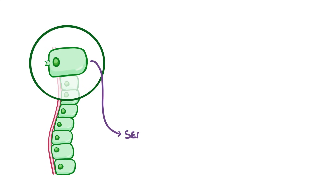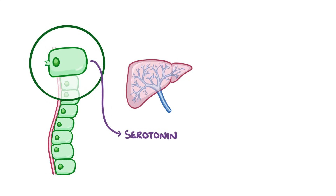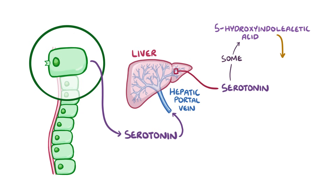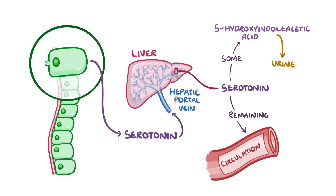When serotonin does get released from neuroendocrine cells, it enters the liver through the portal vein. Once in the liver, some of the serotonin is metabolised into 5-hydroxyindoleacetic acid, and that's then eliminated from the body through the urine. But the remaining serotonin is not metabolised, and this portion remains in the systemic circulation, where it has various effects.